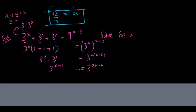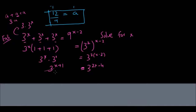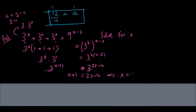Now both sides have base 3, so I can set the exponents equal to each other: x plus 1 equals 2x minus 4. Solving for x gives x equals 5. It looks very intimidating at the start but solves pretty easily.